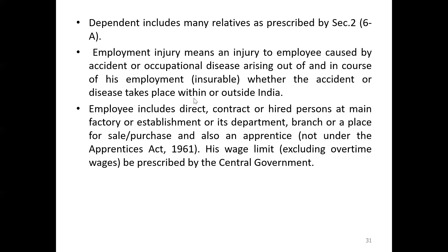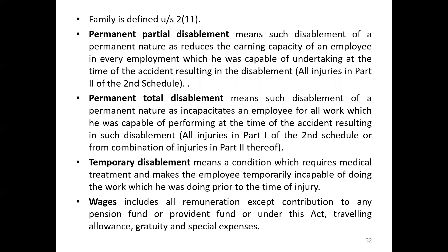Family is defined under Section 2(11). Family means all or any of the following relatives: a spouse; a minor legitimate child; a child who is infirm by reason of any physical or mental abnormalities or injury and is wholly dependent on the earnings of the insured person; dependent parents in case the insured person is unmarried; and a minor brother or sister dependent upon the earnings of the insured person.